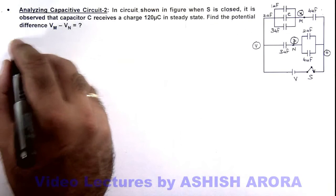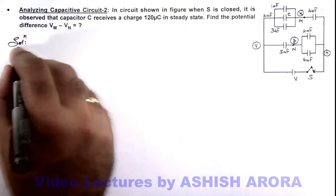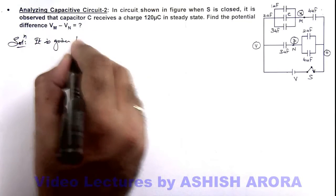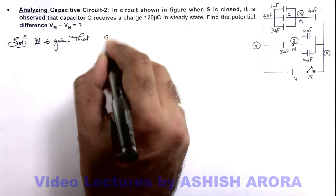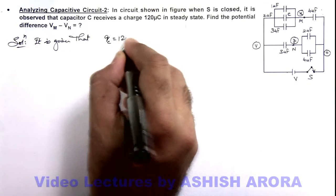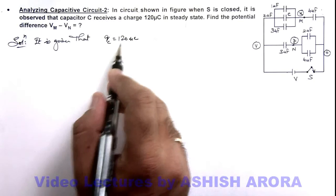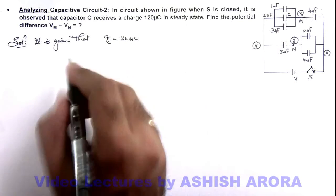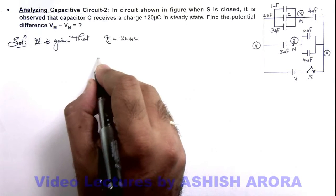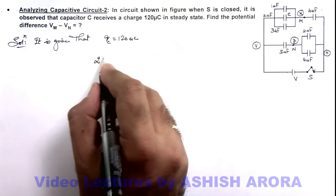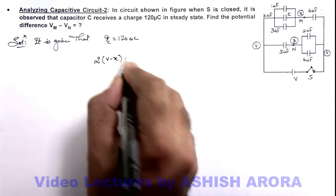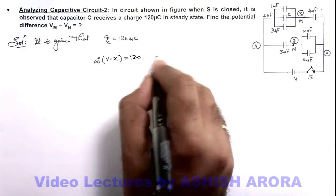It is given that charge on capacitor C is 120 microcoulomb. This 120 microcoulomb can be given as charge on this capacitor C, which is 2 microfarad multiplied by its potential difference. We can write as V minus x, this is 120. This is our equation 1.